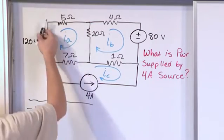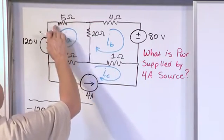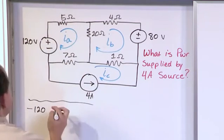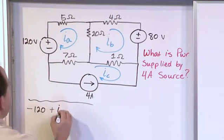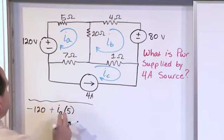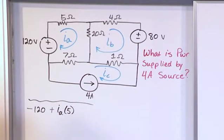Now when we get to the 5 ohm resistor, we're going in the same direction as our current. So we have a voltage drop here. So we treat it as positive IA times 5. So this is V equals IR, positive because of the orientation of everything.